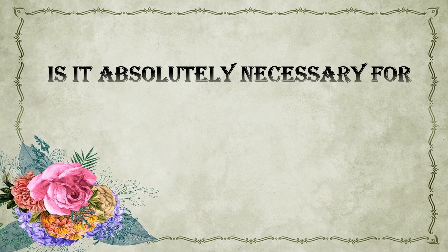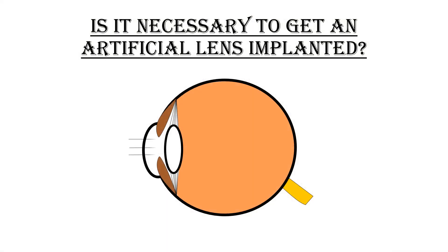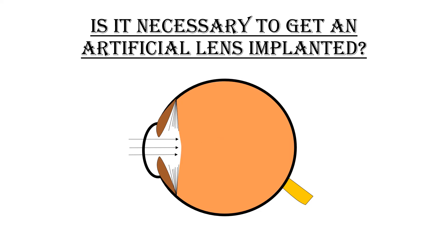Is it absolutely necessary to get an artificial lens implanted during cataract surgery? As we learned, our lens helps in focusing light rays on the retina and this is how we see. If we remove this lens, we need to replace it with something that does the same job — focusing light rays on the retina. That is why we put an artificial lens to replace the natural lens.